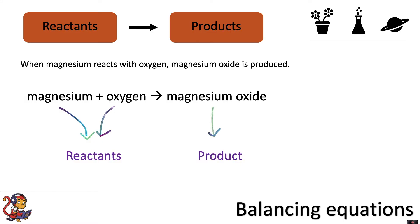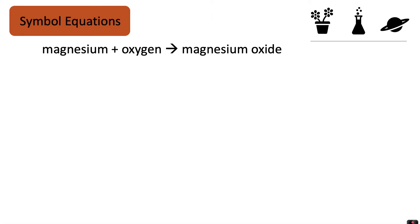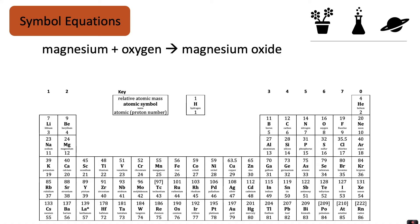We can go further and turn that word equation into a symbol equation. To do that we need to use the periodic table. For example, magnesium is Mg, and oxygen is O. We can start to write our symbol equation: magnesium plus oxygen. Now oxygen always goes around in pairs, which is why we write it as O₂. So magnesium is the element from group 2, and oxygen is the element from group 6.